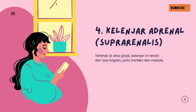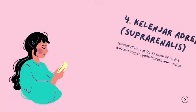Kelenjar adrenal terletak di atas ginjal. Kelenjar ini terdiri dari dua bagian, yaitu korteks dan medula.